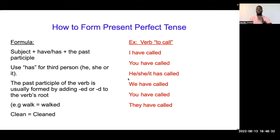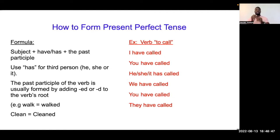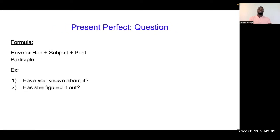An nou konjige verb 'to call' nan prezant pafe: I have called, You have called, He/She/It has called, We have called, You have called, They have called. Ke ou seman, pran pronouan ou, meti have apou sa, ou meti passe participle verb la, epi li touba ou prezant pafe.